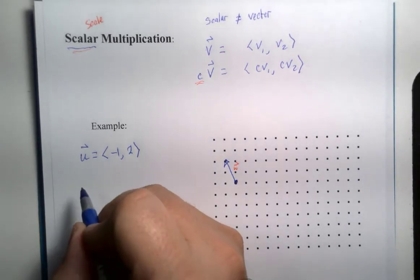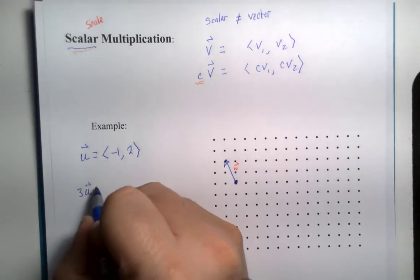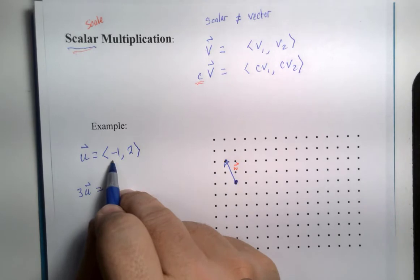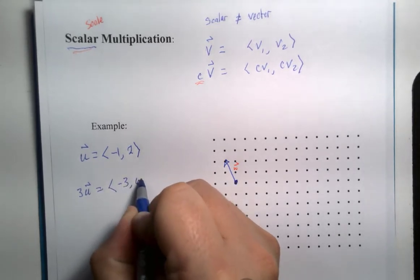If I were to want to compute three u, then I would just multiply negative one times three and positive two times three. Negative three, six.